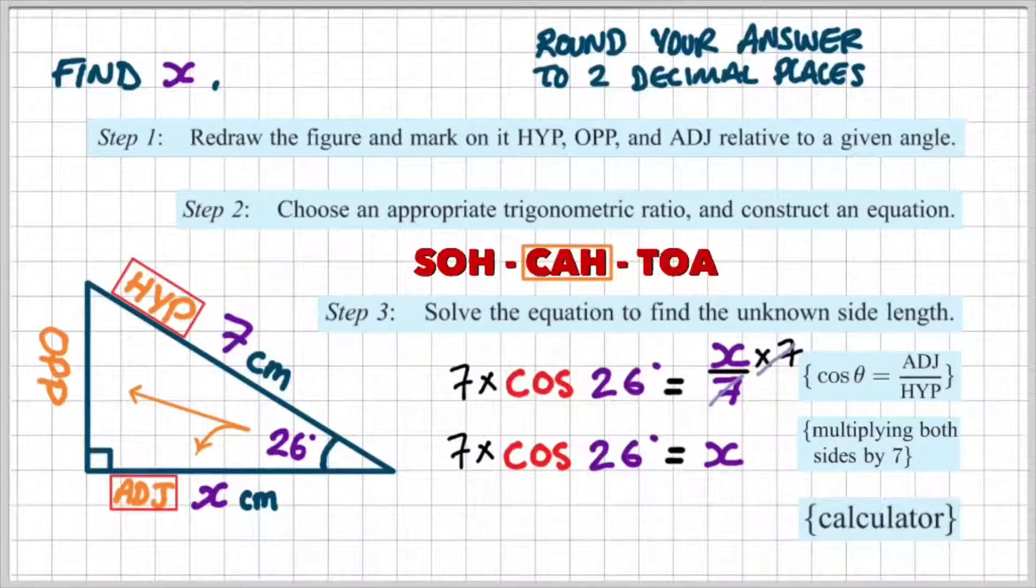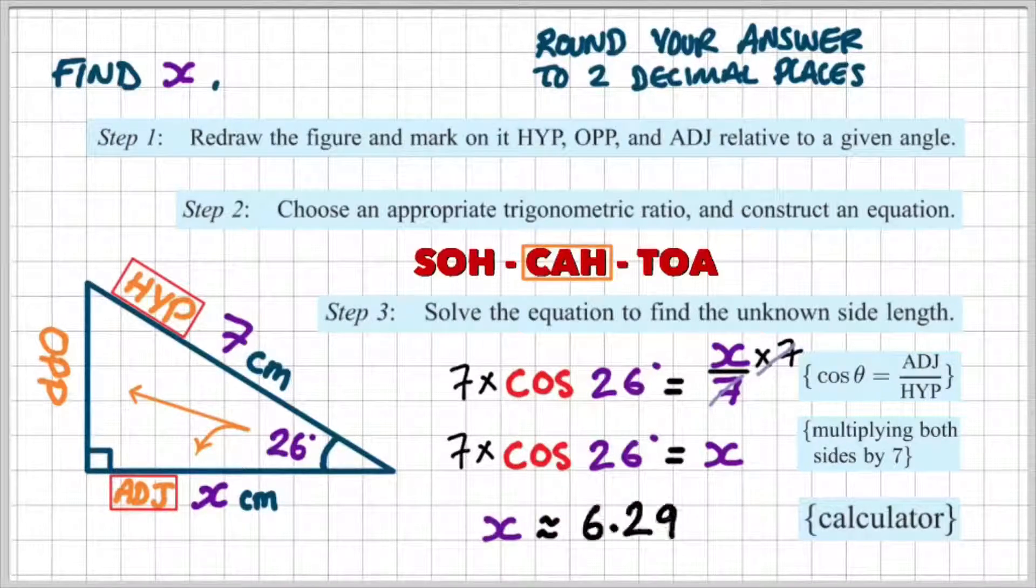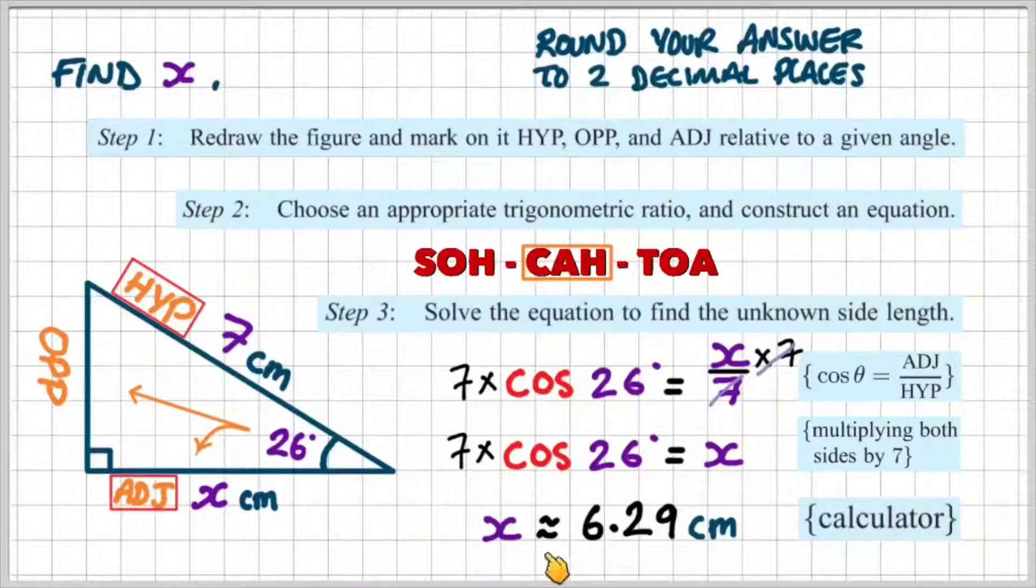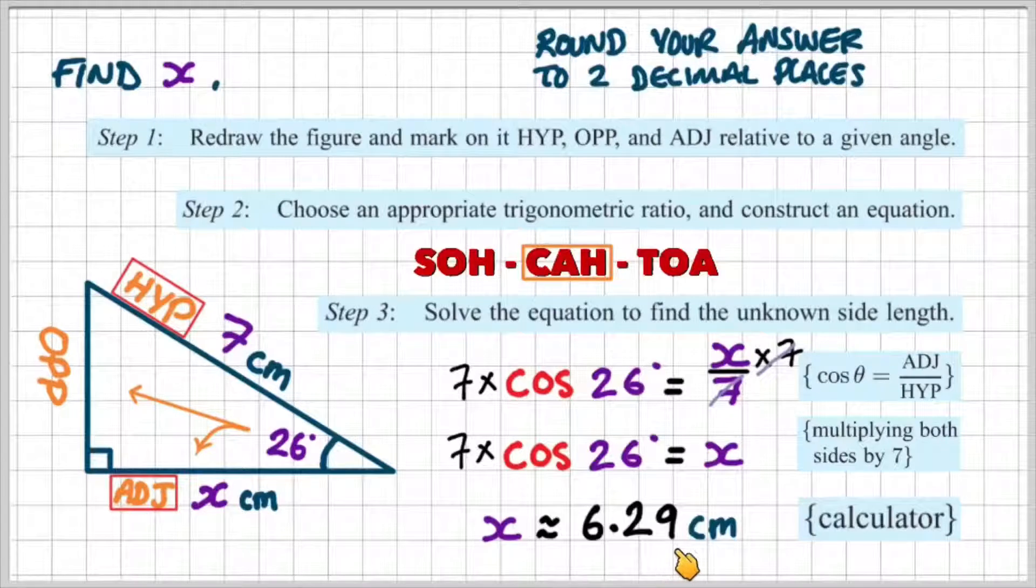Now on the calculator, if I do 7 times cosine 26, I would get X equals approximately 6.26 centimeters. So we're using degrees when you're using trigonometry, so make sure that the calculator's mode is on degrees.